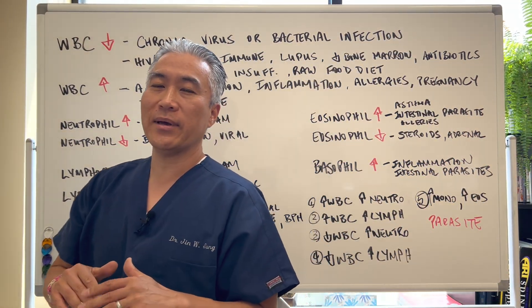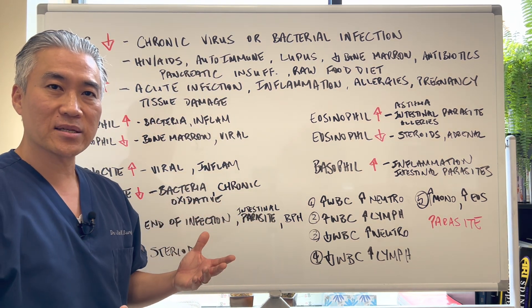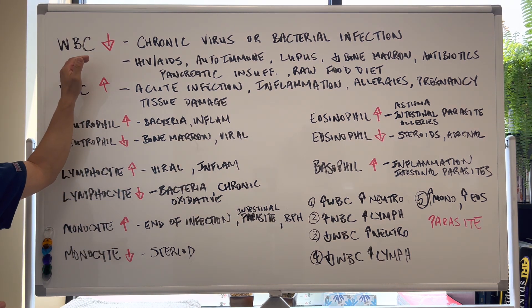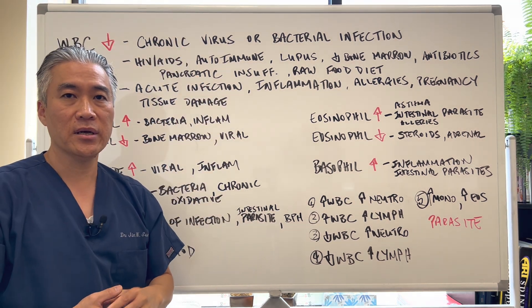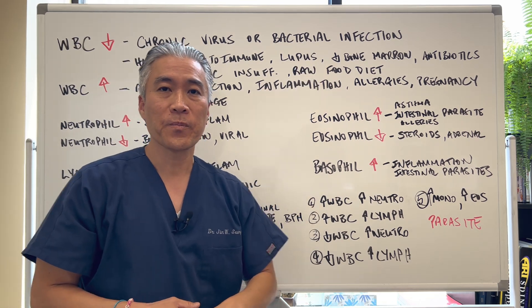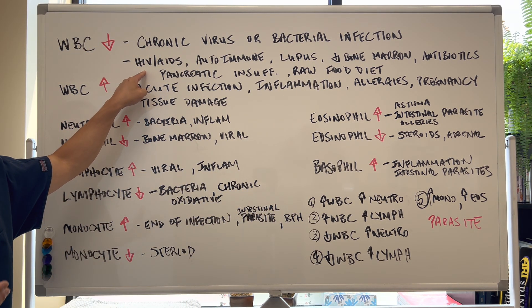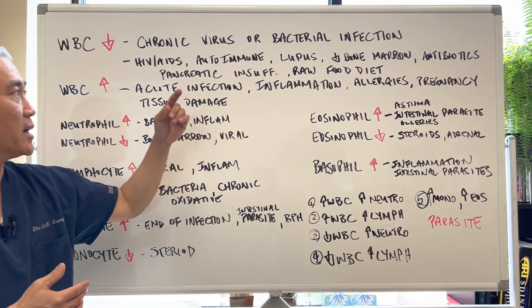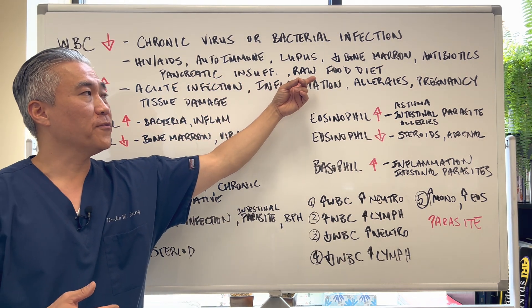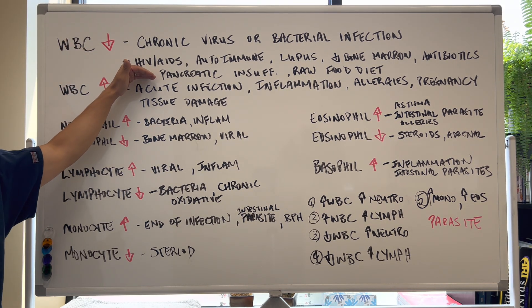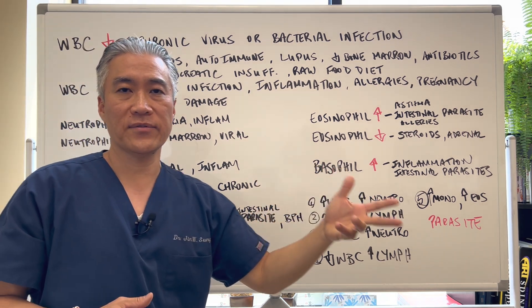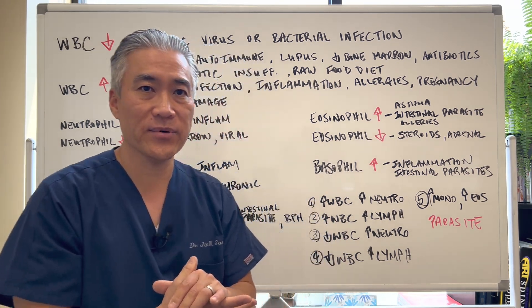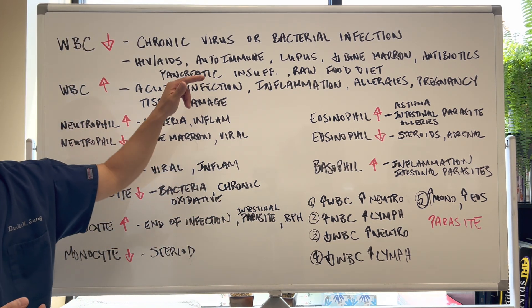This board has a lot of information, so let's go step by step, line by line. When you have a decrease in white blood cell count — your total leukocyte count — it can be related to a chronic viral or chronic bacterial infection. Other reasons include immune suppression like HIV/AIDS, autoimmune disease such as lupus, decreased bone marrow function or bone marrow suppression, antibiotics, or pancreatic insufficiency. Even a raw food diet could decrease your white blood cell count. With pancreatic insufficiency, where you don't have enough digestive enzymes, white blood cells can take over phagocytosis or breakdown of foods, depleting them.